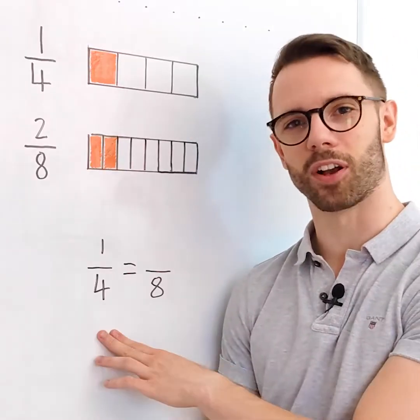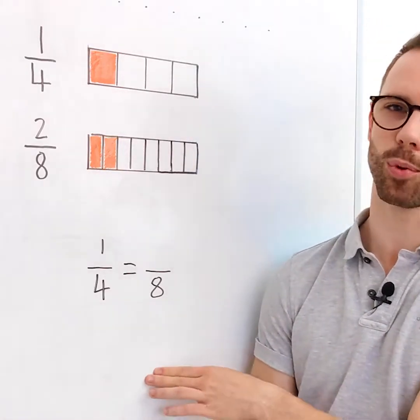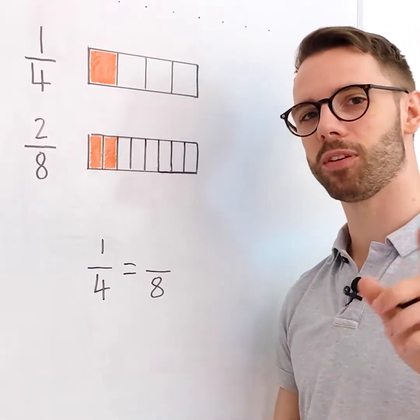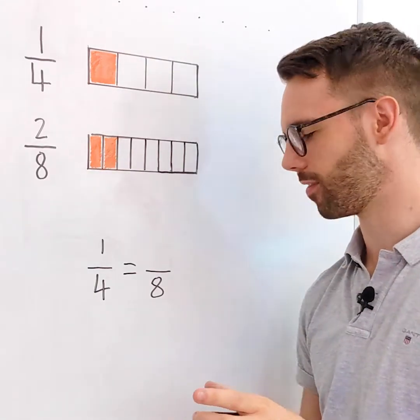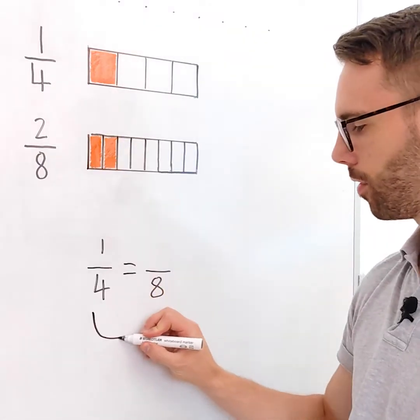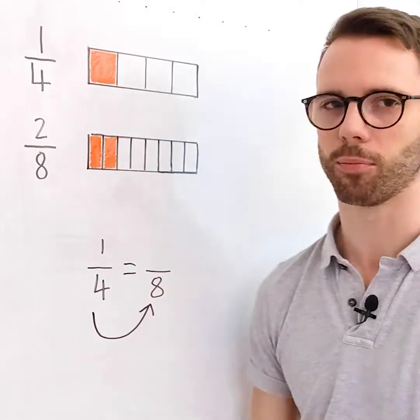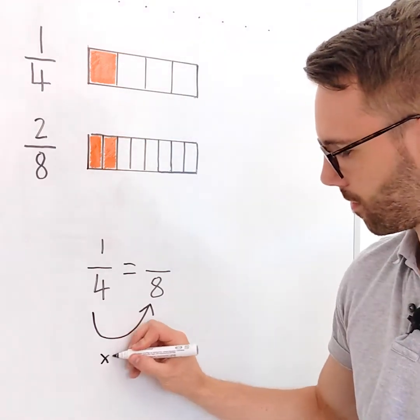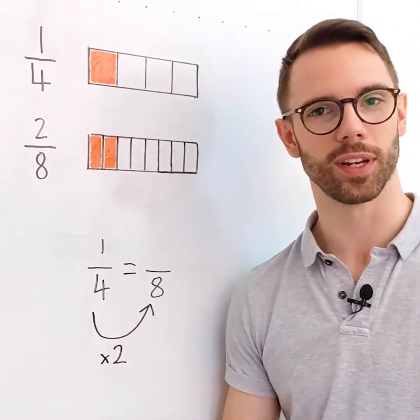Here we have a quarter and we're going to see how many eighths equal a quarter. You can see that we've got both denominators. Now using multiplication or division, how do I get the number four to turn into the number eight? I times it by two, I double it.